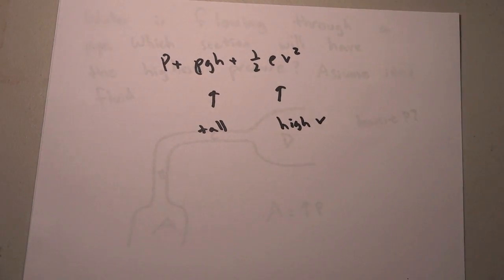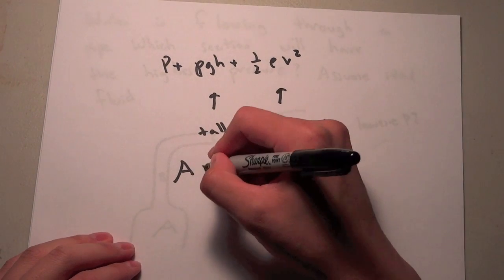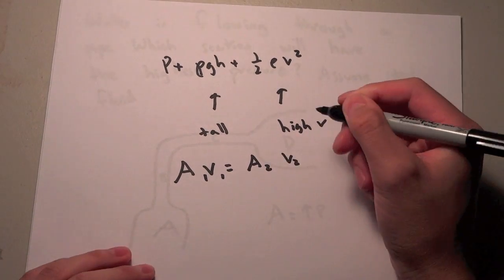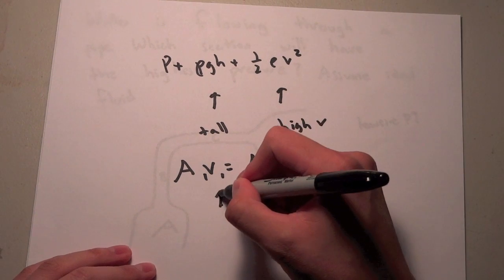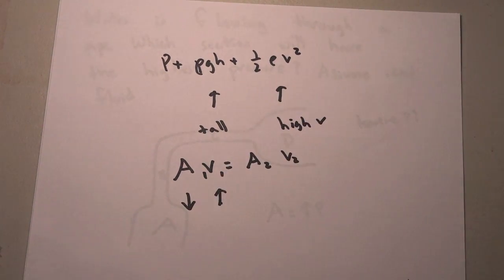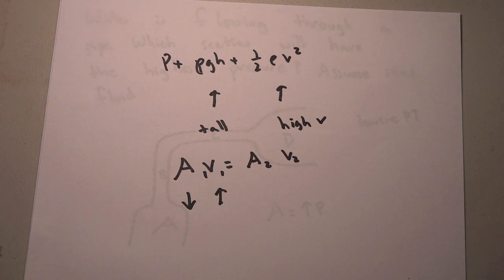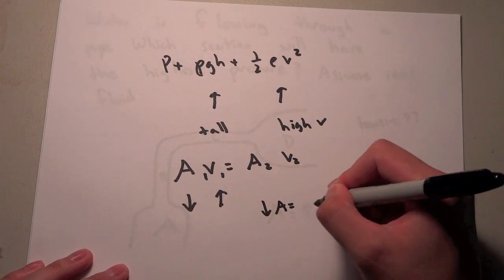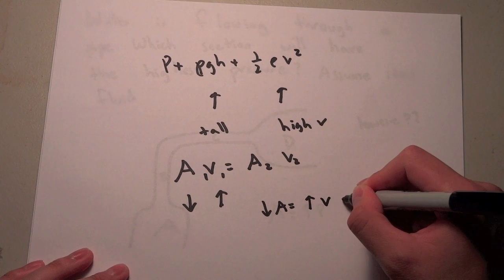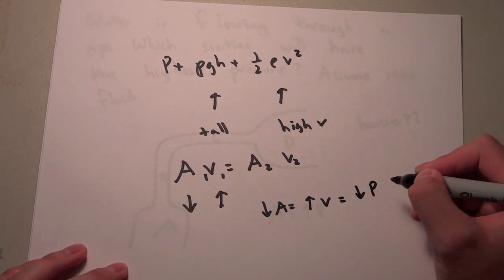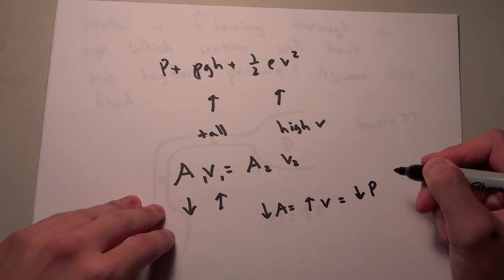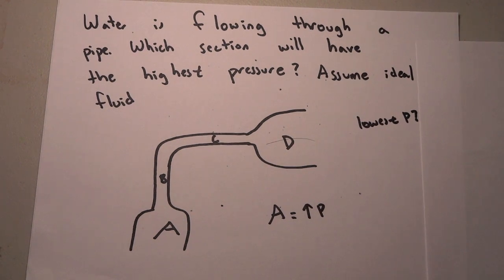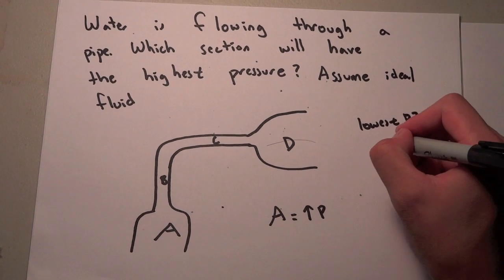So a high velocity, remember from A₁V₁ equals A₂V₂, right? A high velocity, so if we have a high velocity, we're going to have a very small cross-sectional area because they are inverse. So something that has a low area equals a high velocity equals a low pressure, right? So we're going to want to find something that has the lowest cross-sectional area and is also tall up in the air. And so what would that be? That would be C.